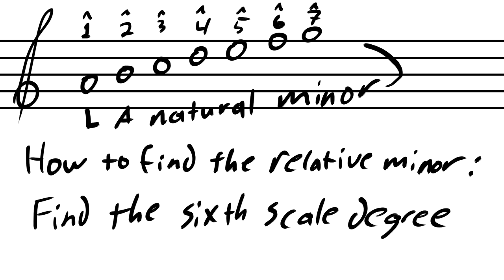In this case, natural minor. We'll learn about the other minor scales at a later date. For now, we are going to call A the first scale degree, and it goes up from there. And that's all there is to it.